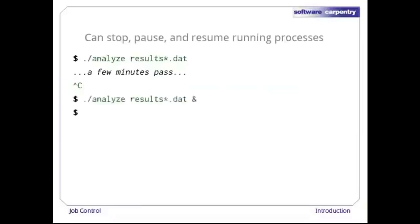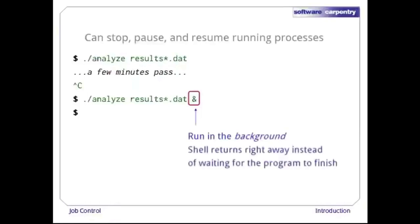Let's run that same command again with an ampersand at the end of the line, to tell the shell we want it to run in the background. When we do this, the shell launches the program as before, but instead of leaving our keyboard and screen connected to the program's standard input and output, the shell hangs onto them. This means the shell can give us a fresh command prompt and start running other commands right away.